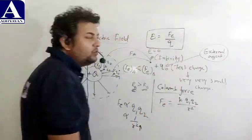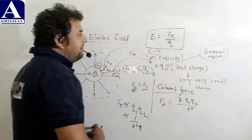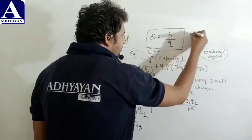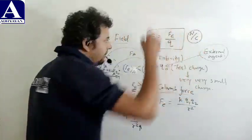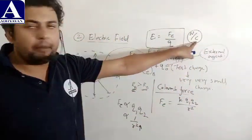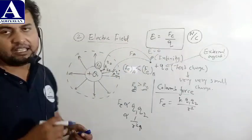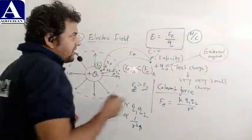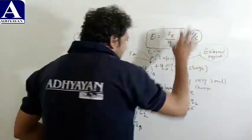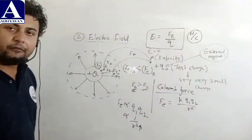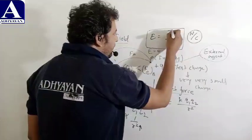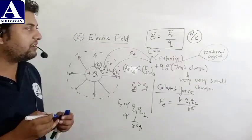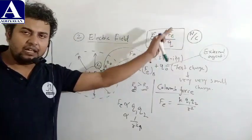If we talk about the SI unit of electric field, force is called Newton and charge is called Coulomb, so Newton per Coulomb is the SI unit of the electric field. Electric field is a vector quantity.